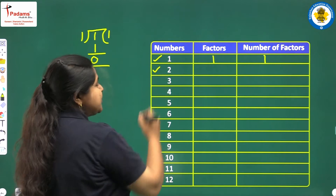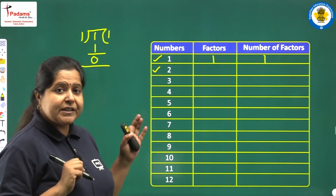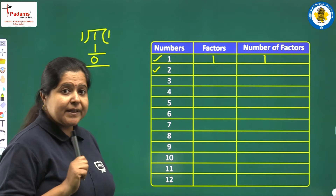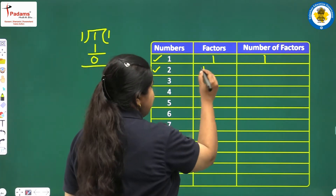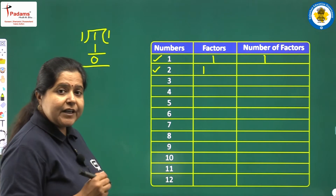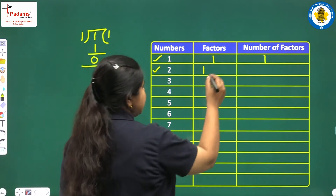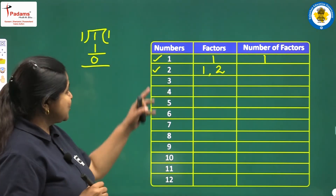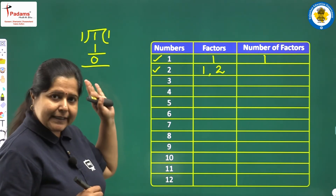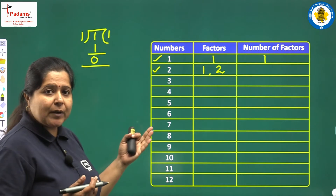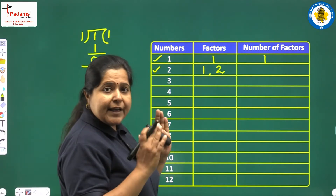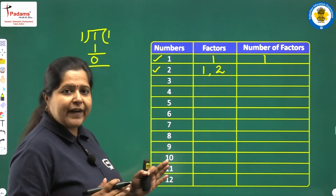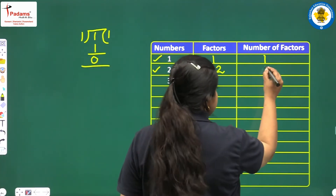Then we move on to number 2. We have to write down the numbers which divide 2 completely. We know that 1 is a factor of every number, so 1 is a factor of 2. Also, every number is a factor of itself, so 2 will be a factor of 2. Is there any other number which will divide 2 completely? The other factors would lie between 1 and 2, and there is no other number between 1 and 2. So there are only 2 factors of 2.